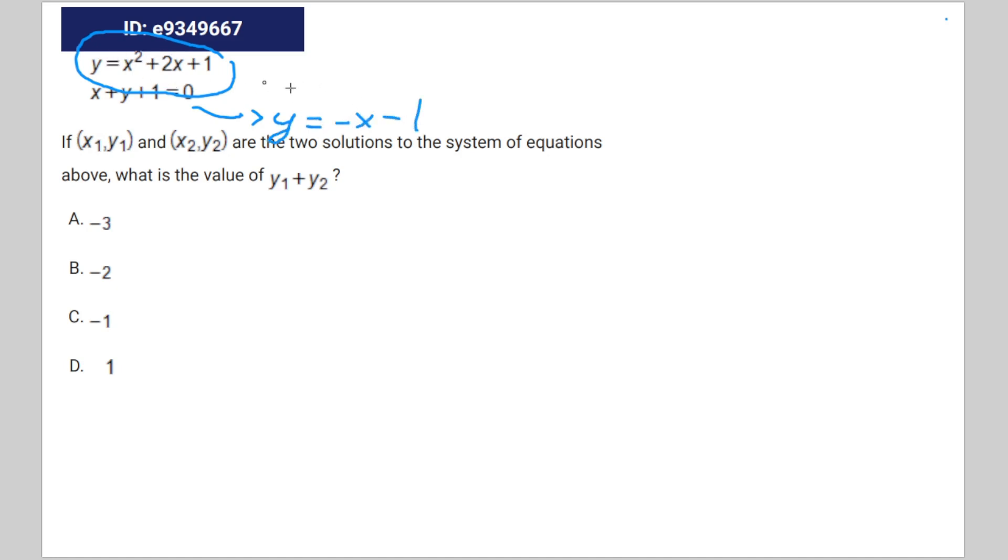Since they're both equal to y, we need to set them equal to each other. So that's going to be x² + 2x + 1 = -x - 1. Add x to both sides and 1 to both sides. You're going to get x² + 3x + 2 = 0.